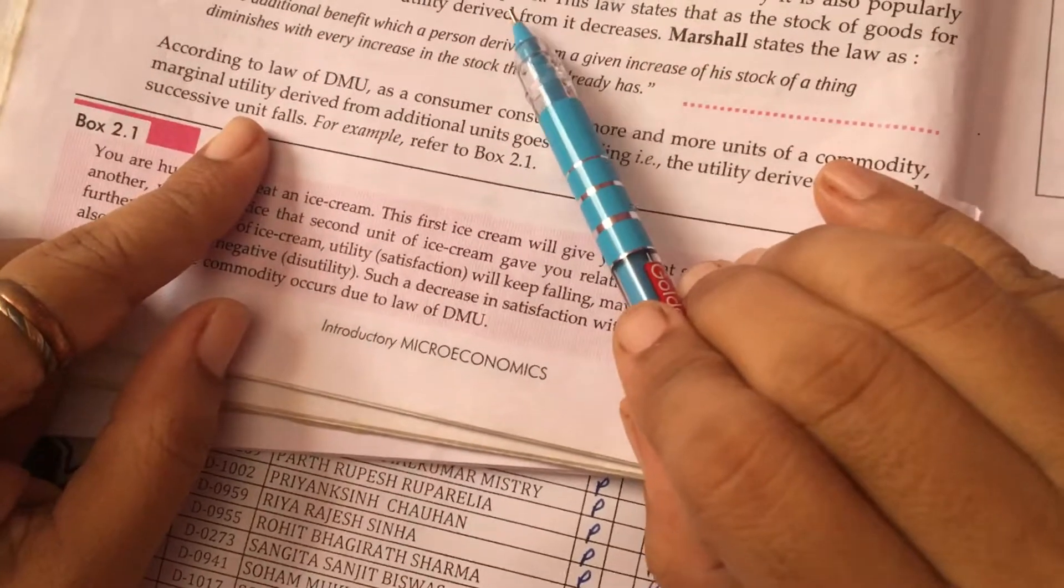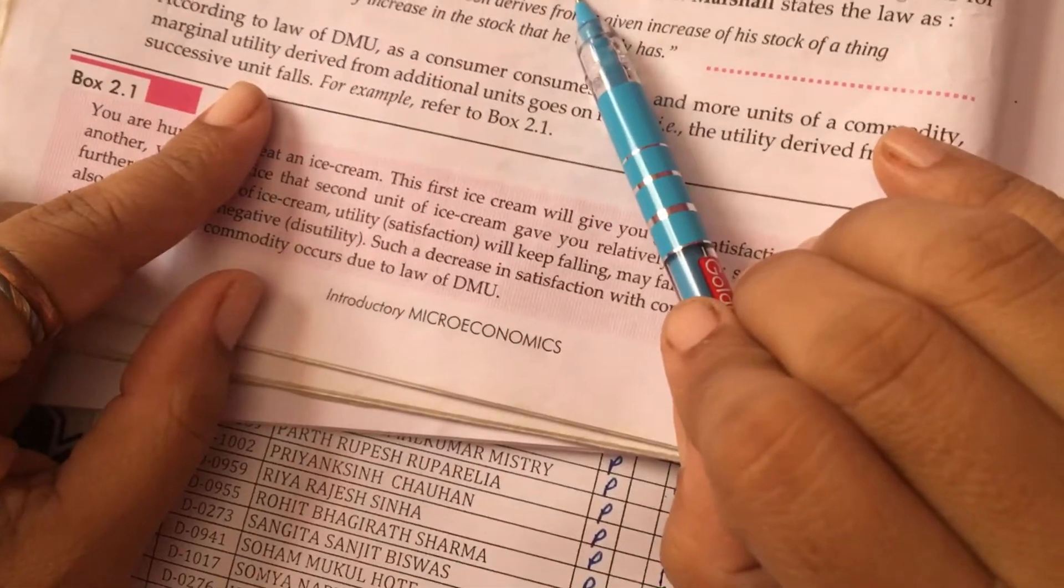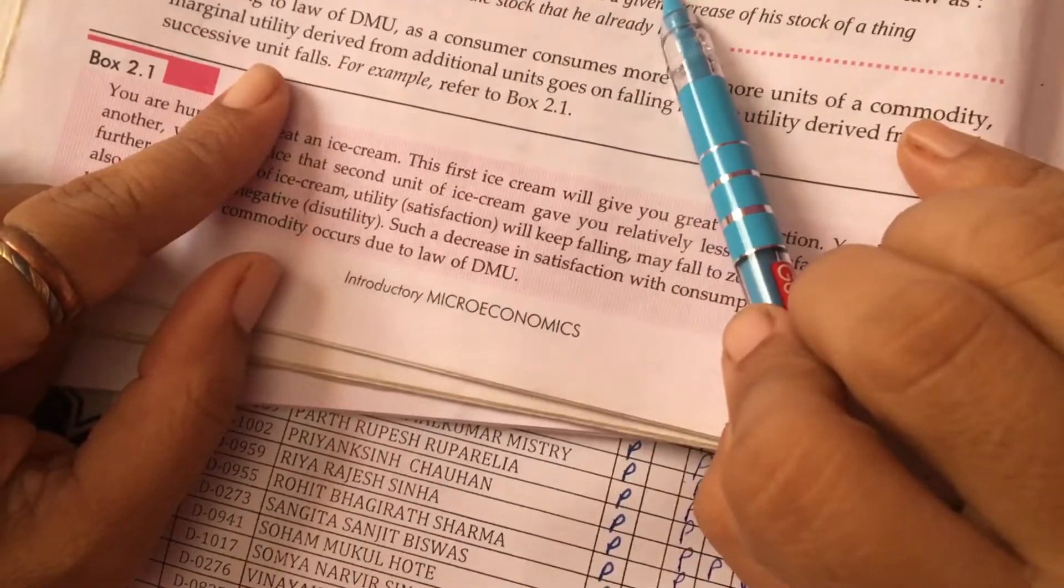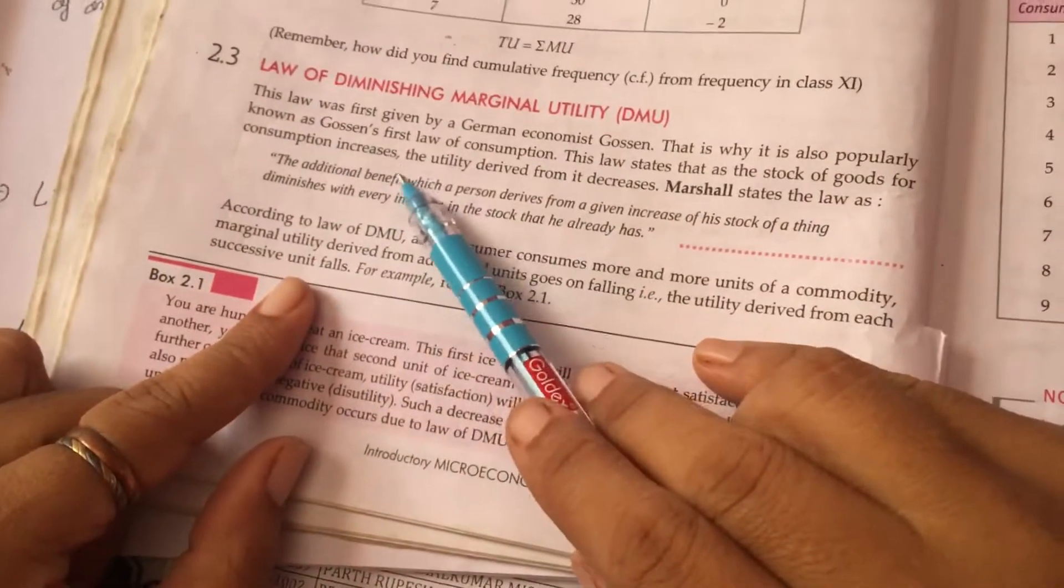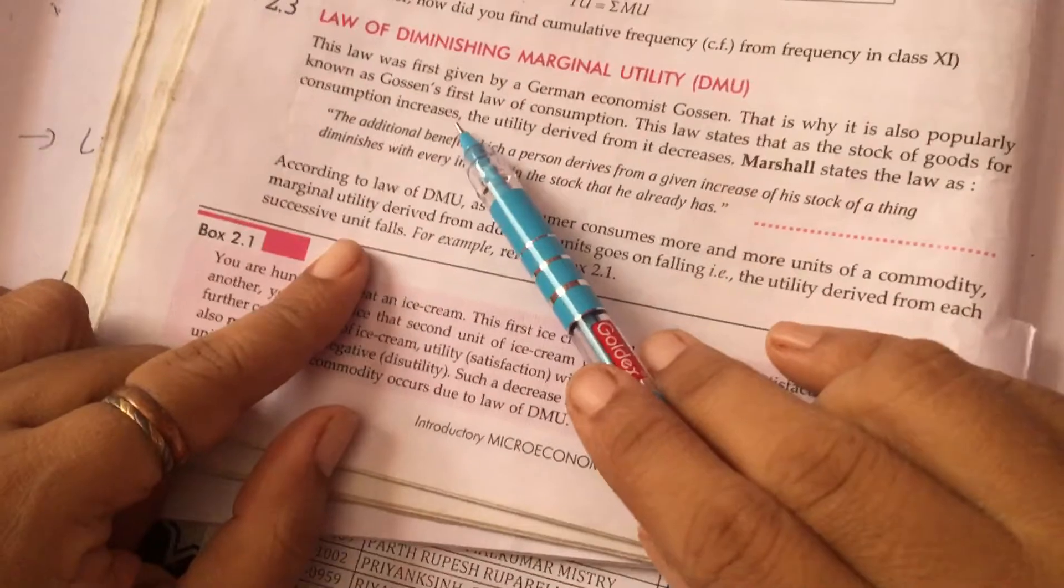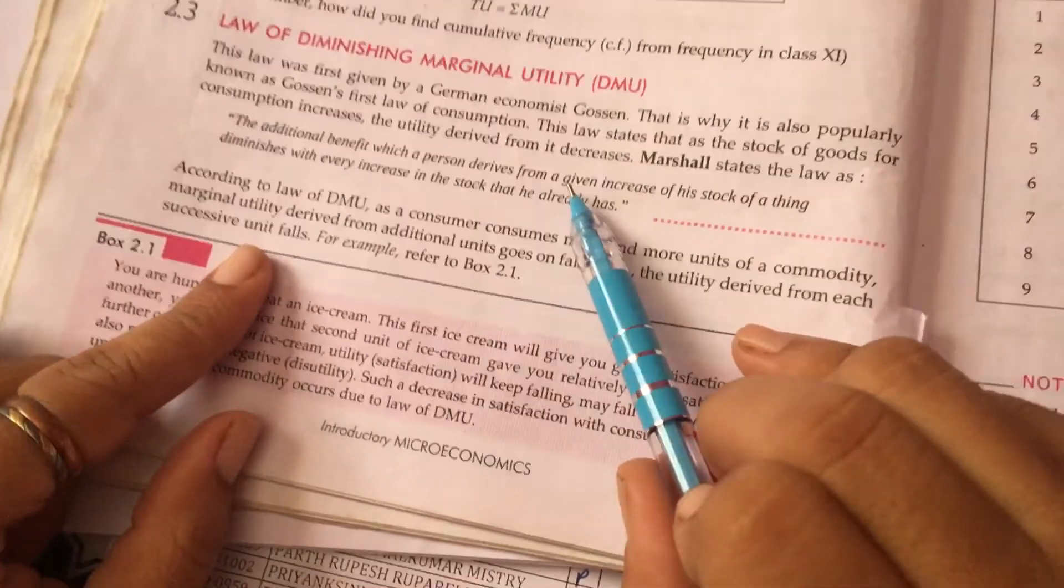Here you are going to study the relation between the total utility and marginal utility. But what does this law state? The law states that as the stock of goods for consumption increases, when your consumption of the good is increasing, the utility derived from it decreases.